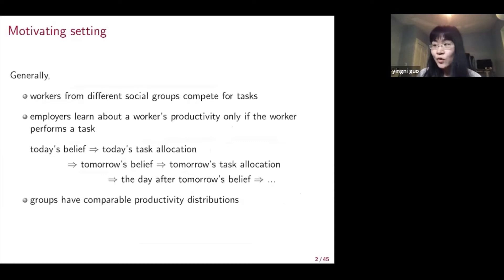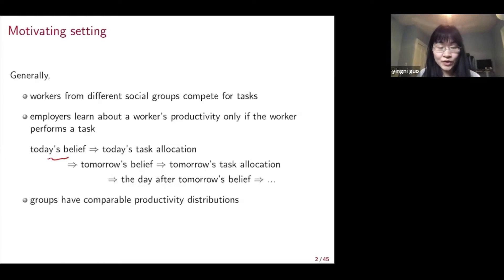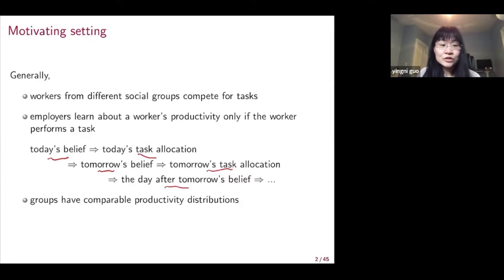This type of market structure is very general. Workers from different social groups compete for tasks, and employers learn more about a worker's productivity only if the worker performs a task. Employer learning and task allocation are inseparable. Employers' beliefs today affect today's allocation, which affects employers' beliefs tomorrow, which affects tomorrow's task allocation, and so on. Different social groups have comparable productivity distributions. One group might be expected to have a lower average productivity, but the differences across groups are really, really small.